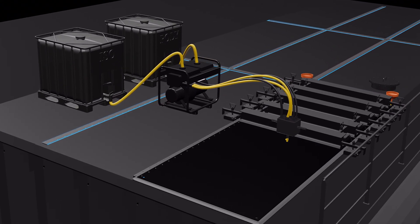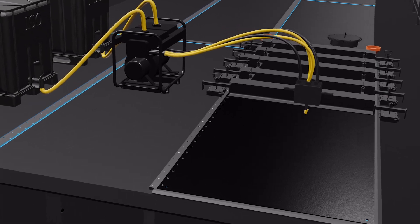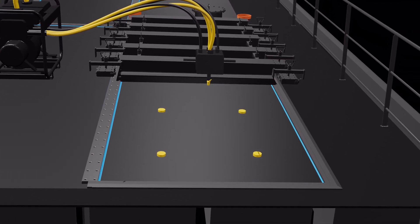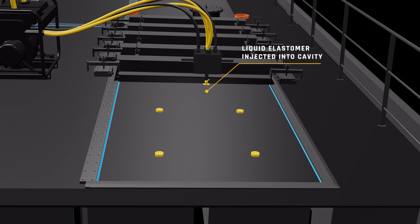The injection head is connected to the injection port. The injection machine introduces liquid elastomer into the airtight cavity. The cavity is filled in less than five minutes.